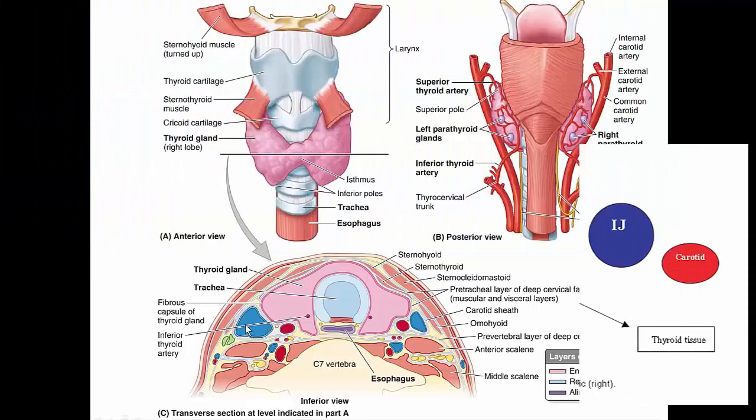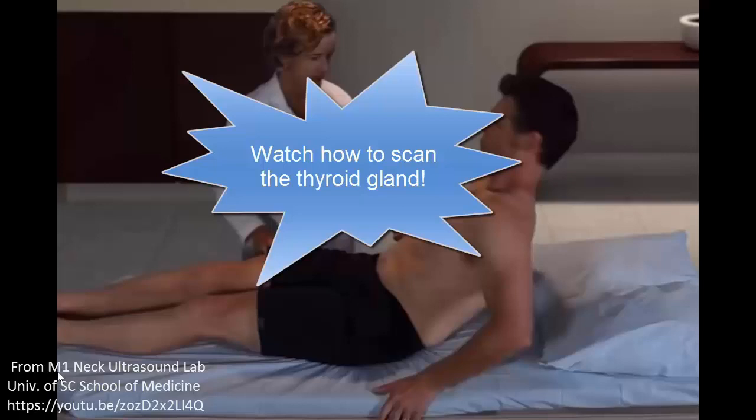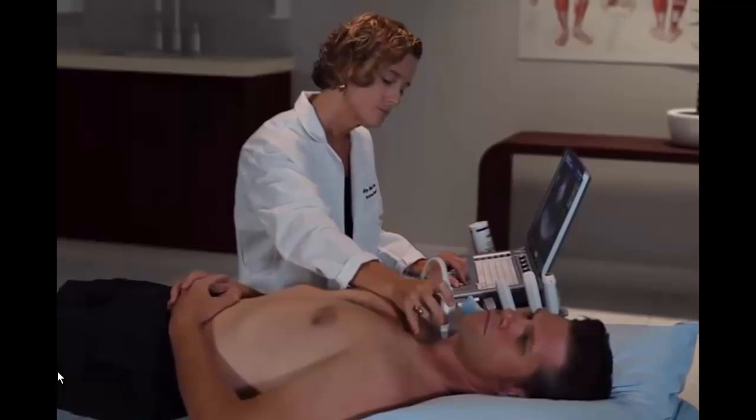If you move superiorly, you should see the bifurcation of the common carotid into the internal and external carotid arteries. Note that you can also do a Valsalva maneuver and have the IJV billow up nicely, and if you press down, it should be compressible. The patient should be lying supine on the examination table, raised to a comfortable level if needed. A pillow can be placed under the shoulder to provide better access to the thyroid gland by extending the neck.